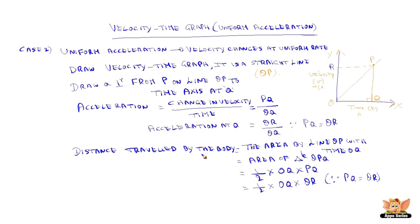Hence the distance traveled by the body when the body is in uniform acceleration is the area of the triangle OPQ: half into OQ into OR.